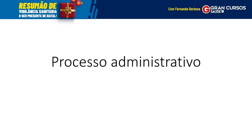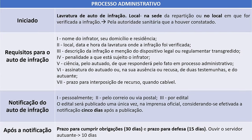A última parte da Lei 6437 trata do processo administrativo sanitário. Ele é iniciado com a lavratura do auto de infração, que pode acontecer na sede da repartição ou no local da infração. O auto de infração possui requisitos específicos, garantindo que a pessoa autuada saiba como se defender. A notificação do auto pode ser entregue pessoalmente ou pelo correio.